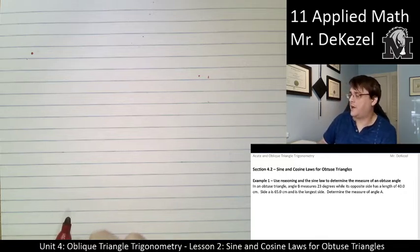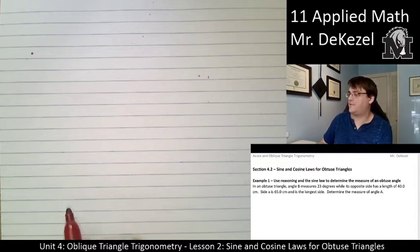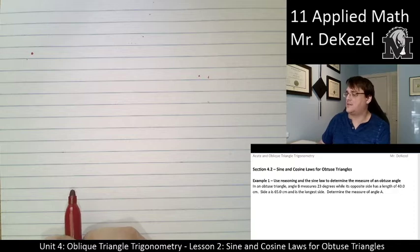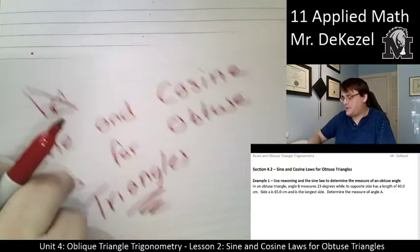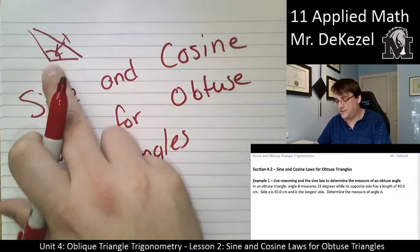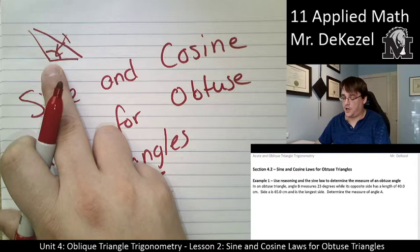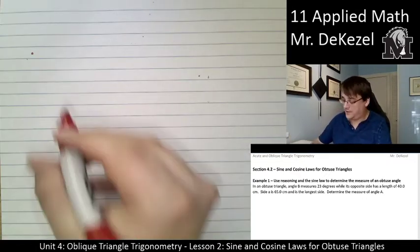In an obtuse triangle, angle B measures 23 degrees, while its opposite side is the length of 40 centimeters. Side A is 65 centimeters and is the longest side. So when it says the longest side, that is always going to be the angle that is opposite of our obtuse angle. The longest side must be opposite of the obtuse angle.